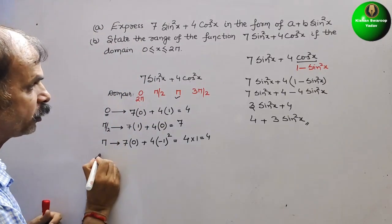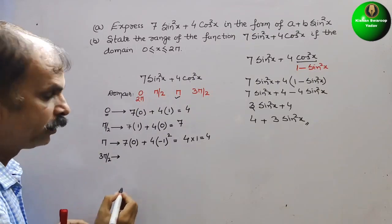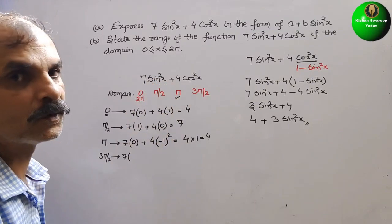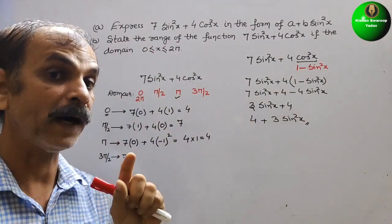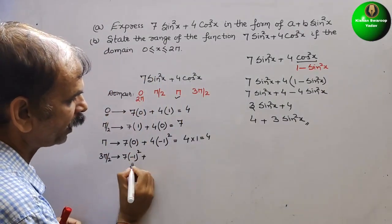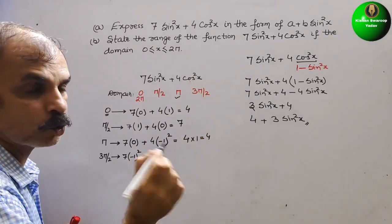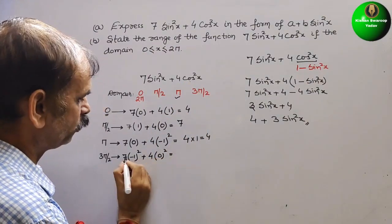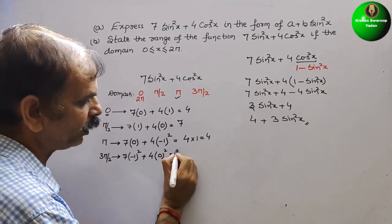At x = 3π/2 (270°): sin(270°) = -1, so (-1)² = 1. And cos(270°) = 0, so 0² = 0. Therefore: 7(1) + 4(0) = 7. So f(3π/2) = 7.